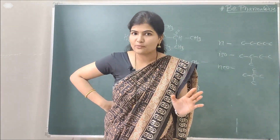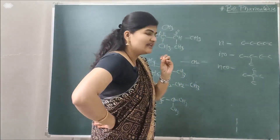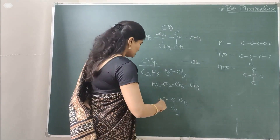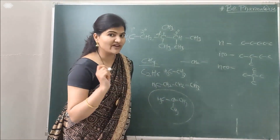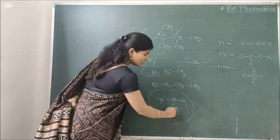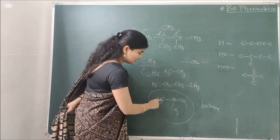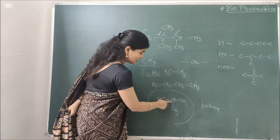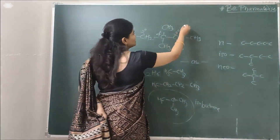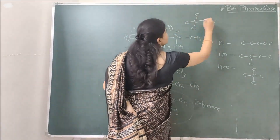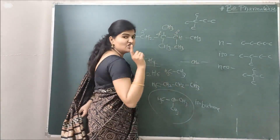N, iso, and neo are not used in the IUPAC system. In IUPAC, we follow a completely different set of rules. For common system, let's take an example: count the number of carbons — say we have 4 carbons. That gives us butane as the parent. Is it a straight chain? No. Is it iso? Yes, because the second-to-last carbon has one methyl group. So it becomes isobutane. That is how common names are given.